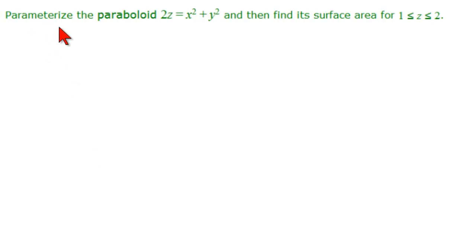The problem reads: parameterize the paraboloid 2z equals x squared plus y squared, and then find its surface area for 1 less than or equal to z less than or equal to 2.